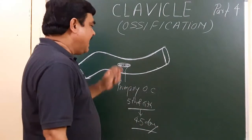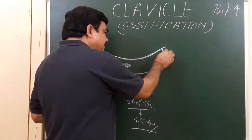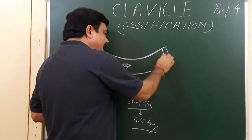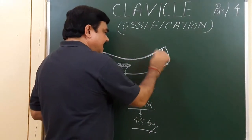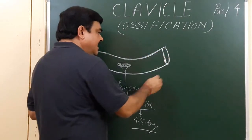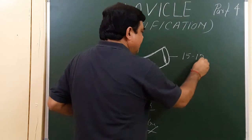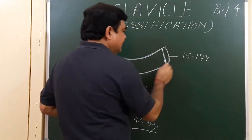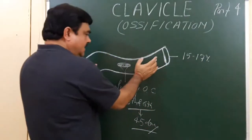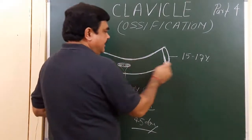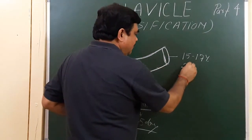This is the primary center and the secondary center for the medial end. The secondary center for the medial end appears during fifteen to seventeen years and they get fused with the shaft during twenty-one to twenty-two years of age.